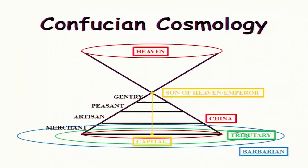Confucian cosmology is a very interesting way of understanding the Chinese mind. A lot of emphasis has been made on how the Chinese mind works. In Confucian cosmology, the most important aspect is heaven, which is at the top. Heaven here does not refer to an Abrahamic or Buddhist heaven — it simply means some kind of cosmic law, some kind of power that controls everything happening on earth. Heaven decides the course of events on earth.